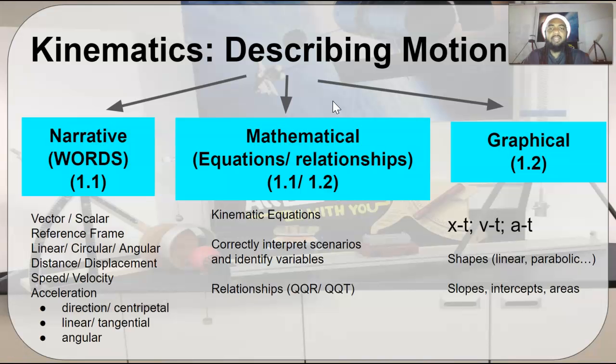That is everything that you need to know. That's all the content for Unit 1, which again, for the year 2020, may account for up to 23% of the AP exam. You need to be able to understand the meaning of these words. You need to be able to use these mathematical equations and understand shapes, slopes, intercepts, and areas for these three types of graphs. Join me in the next video where I go through some examples of how we apply this content by bringing in the science practices looking at real AP Physics 1 past and practice questions.